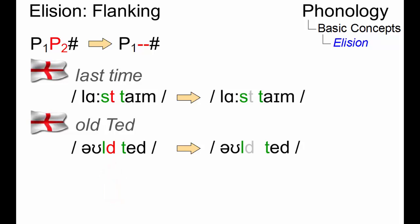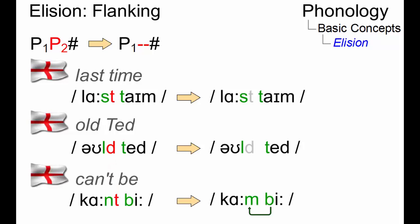Sometimes elision comes together with assimilation, as in can't be, where due to the elision of the final consonant in can't, the now final alveolar nasal becomes bilabial under the regressive influence of b.